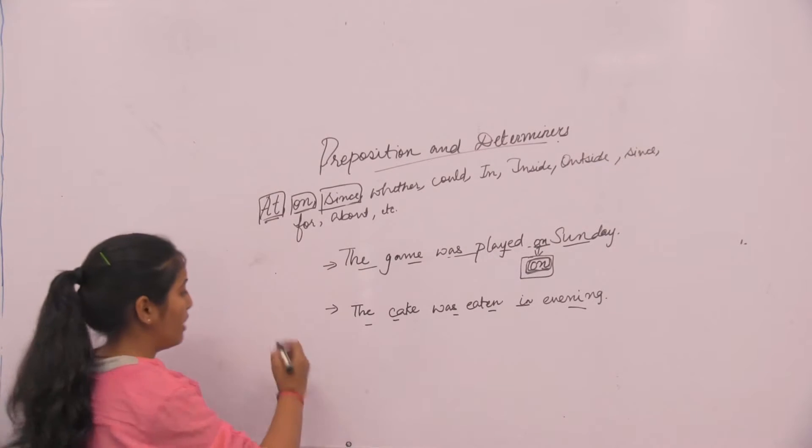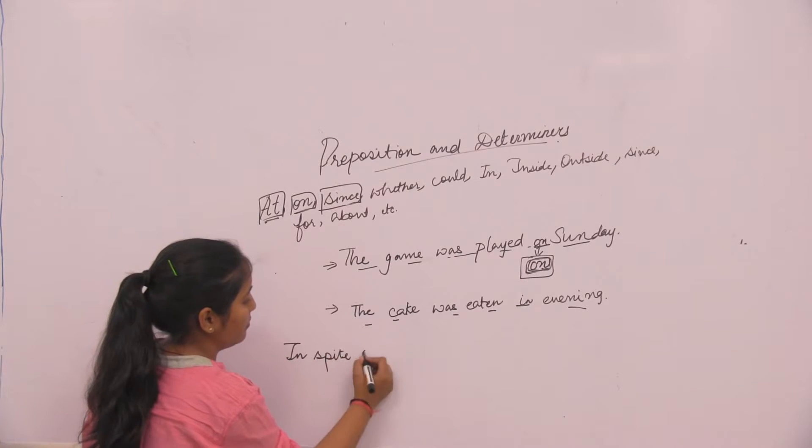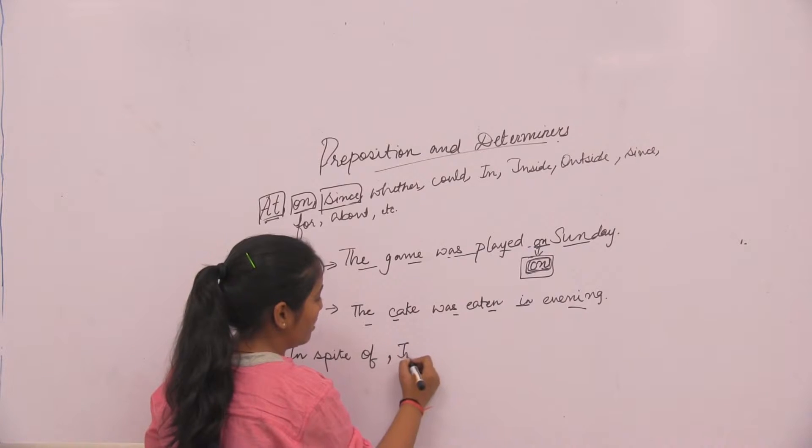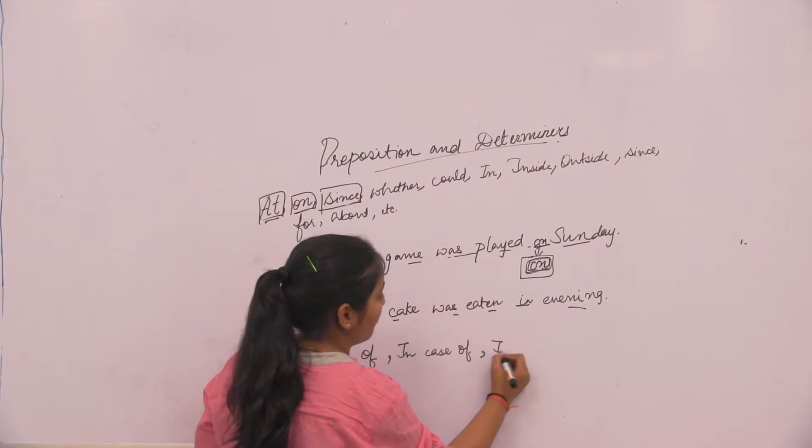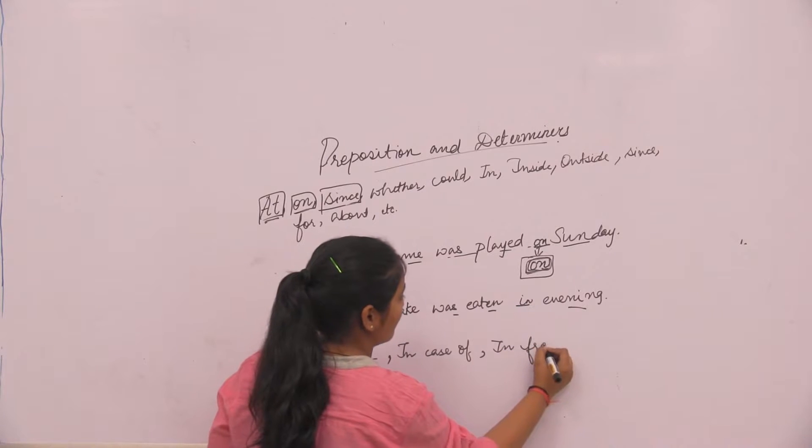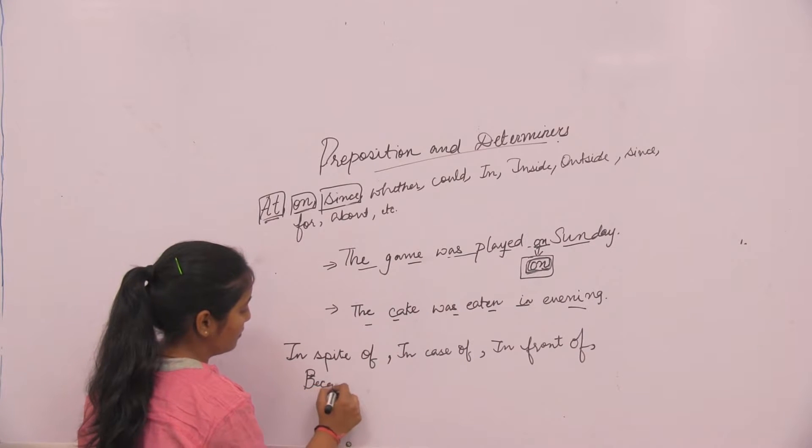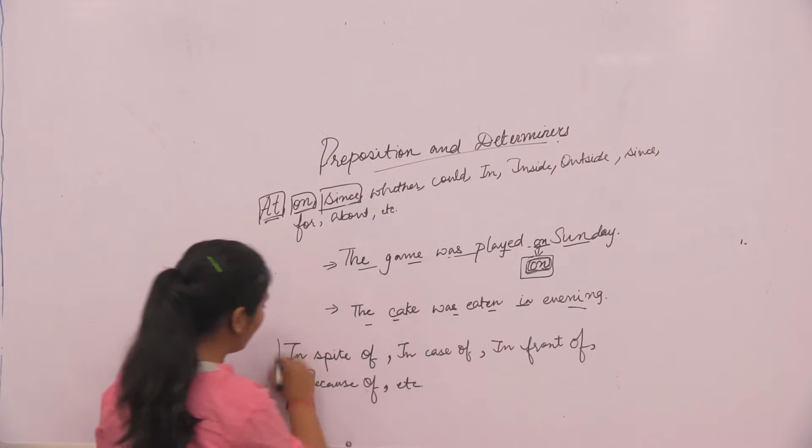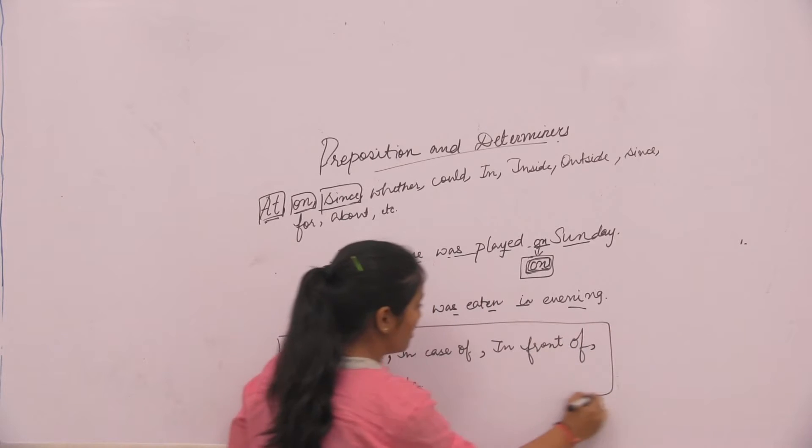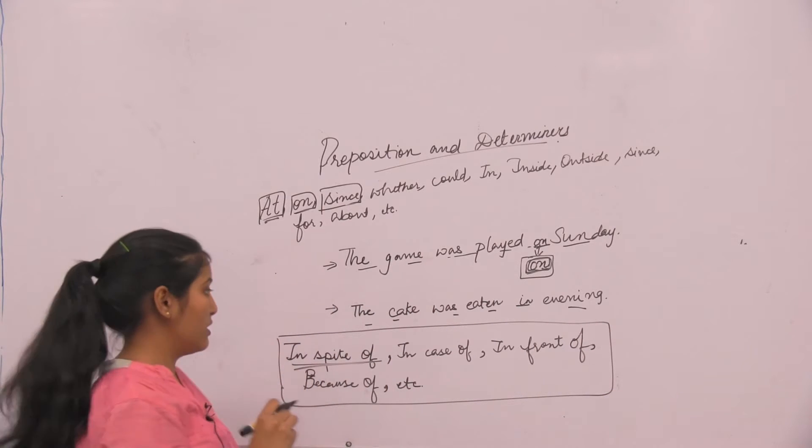Now there are some prepositions which consist of two words also, like in spite of, in case of, in front of, because of, and etc. These are the prepositions which consist of two words.